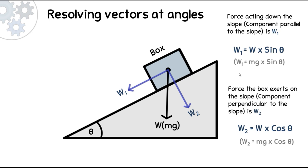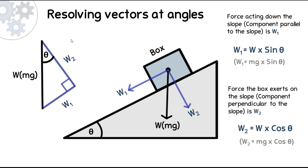Now I'll show you where these formulas come from. If we move W1 down to form a triangle, we end up with a right-angle triangle. Because of geometry, the angle here will be the same as the slope angle, so theta is here. The hypotenuse of this triangle is the weight of the box, the adjacent side is the perpendicular component W2, and the opposite side is the force acting down the slope, W1. We know there's a right angle here because the components are parallel and perpendicular.